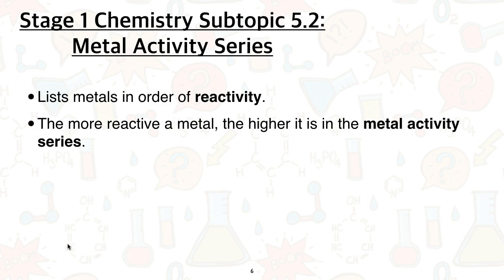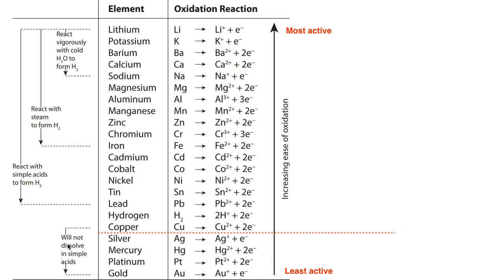The metal reactivity series lists metals in order of decreasing reactivity — at the top you have the most reactive metals, and at the bottom the least reactive. It doesn't include every metal, but typically includes metals relevant to us and those commonly found in the earth's crust. The series can vary slightly depending on the source, but it goes from most active at the top down to least active at the bottom.